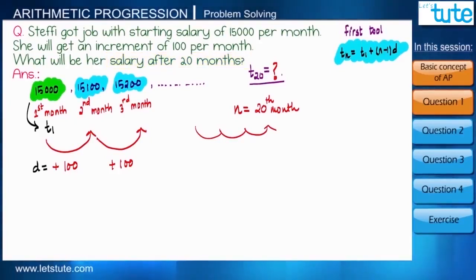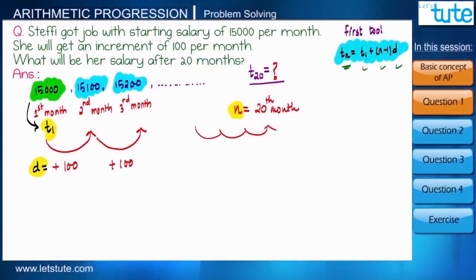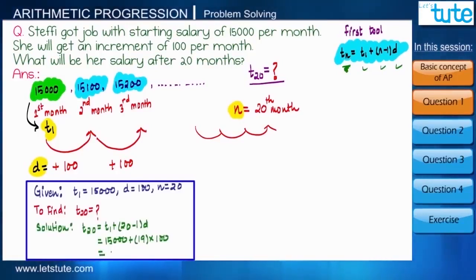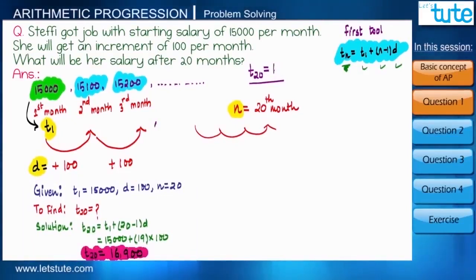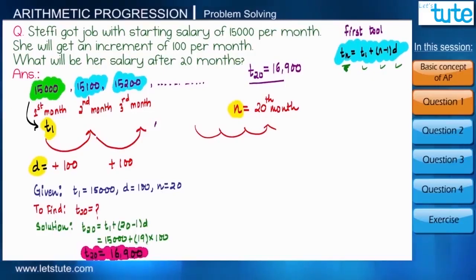We now have three parameters: t1, d, and n. We can easily find the fourth parameter tn, which comes out to be 16,900. So her salary in the 20th month will be 16,900. If we understand the situation, we can solve any kind of arithmetic progression very easily.